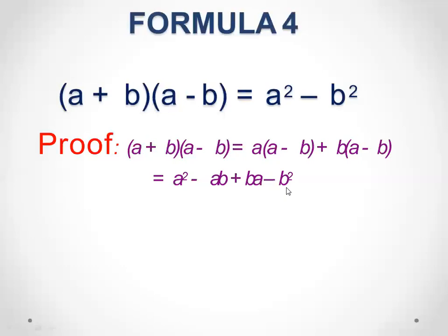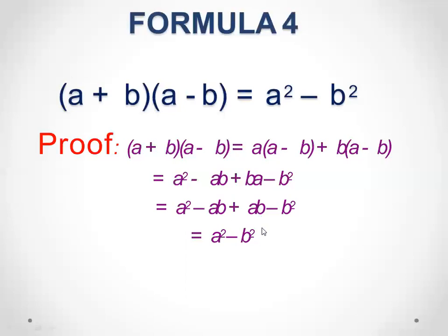Here we can see minus ab and plus ab — we can rewrite ba as ab. So plus ab and minus ab cancel out, and we are left with a square minus b square. We began with LHS and have got RHS.